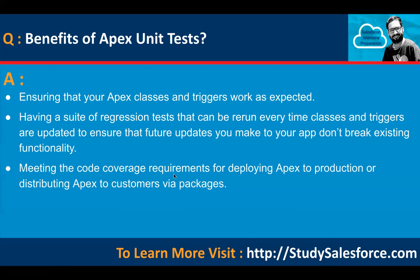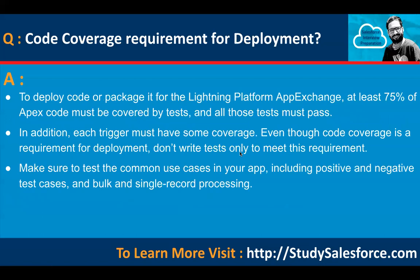Meeting the code coverage requirements for deploying Apex to production or distributing via packages: to deploy or package code for the Lightning Platform AppExchange, at least 75% of Apex code must be covered by tests and all those tests must pass. That is the minimum requirement, but while writing Apex tests try to have at least 80 to 90% code coverage. Whenever Apex code changes you need to update your Apex test class as well. Each trigger must also have some coverage.